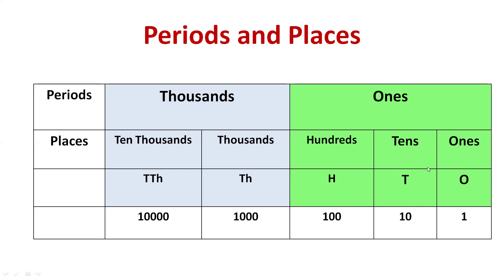We can also write these places as numbers. For ones, we use 1. For tens, we use 10. For hundreds, we use 100 — two zeros. For thousands, we write three zeros — 1,000. And for ten thousands, we write four zeros — 10,000.